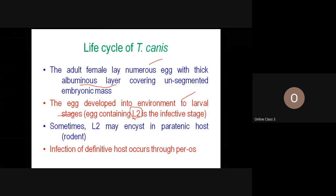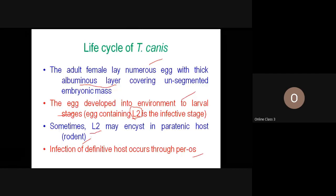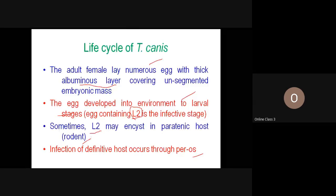In the environment, the larvae are incapable of hatching and remain within the eggshell. Infection occurs through ingestion of the egg containing L2. Sometimes the eggs are ingested by a paratenic host like rodents. Inside the rodents, they hatch but do not transform into L3 — they remain as L2, encysted within the rodent tissue. When the definitive host, like dogs or foxes, predates on the rodent, the cycle is complete.